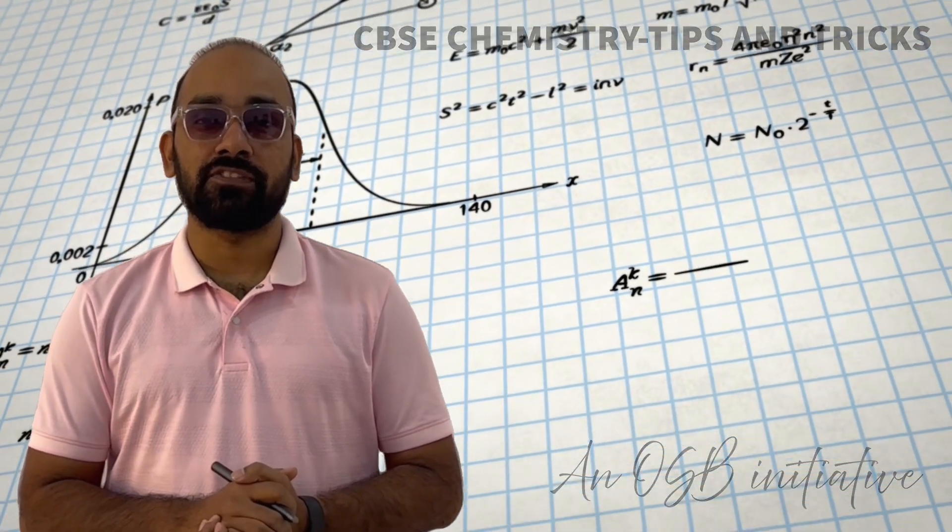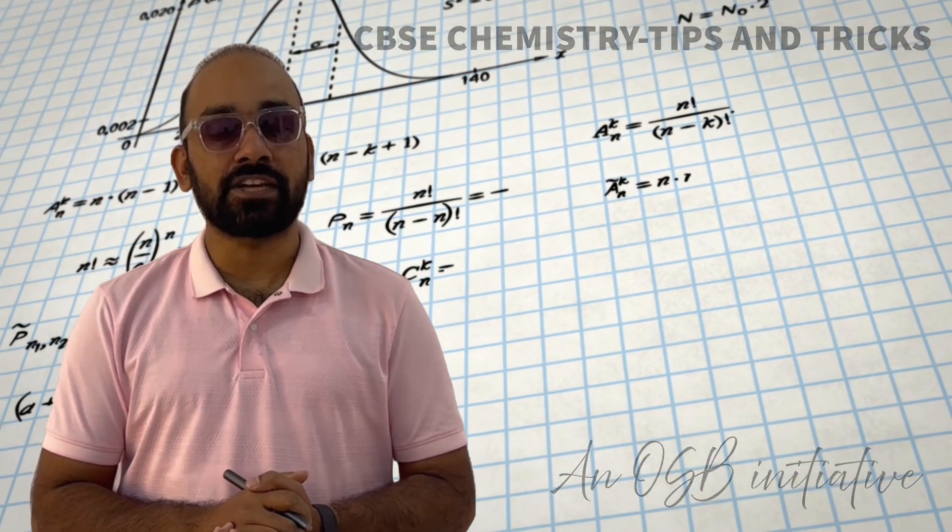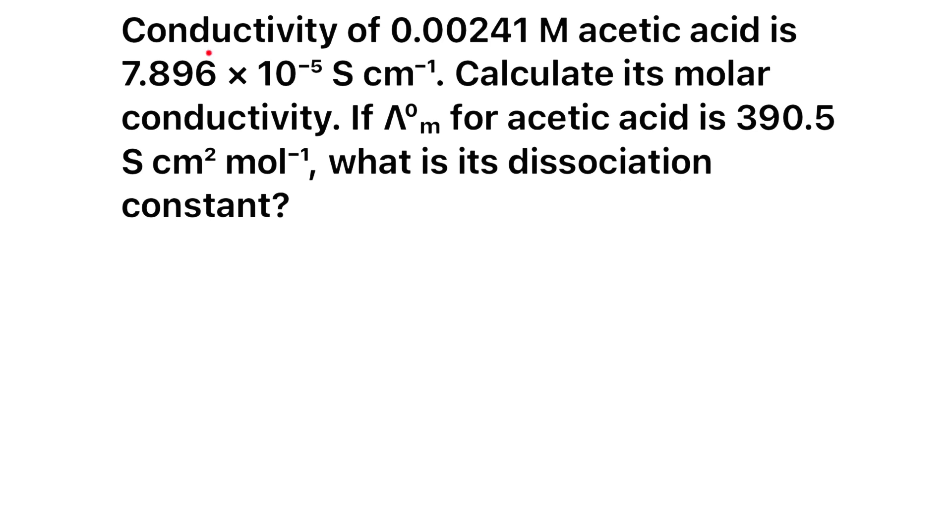Let us study chemistry together with CPSC chemistry tips and tricks. Conductivity of 0.00241 molar acetic acid is 7.896 into 10 raised to minus 5. Calculate its molar conductivity. If limiting molar conductivity of acetic acid is 390.5, then what is its dissociation constant? That is the question.